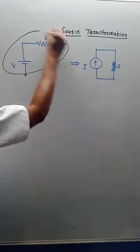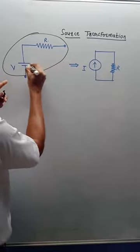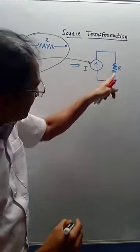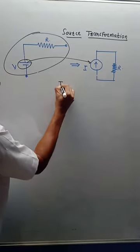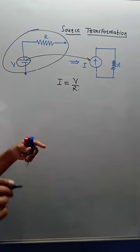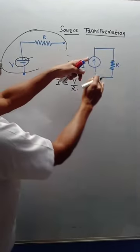If we have a voltage source in which a resistor is connected in series, you can directly convert this voltage source into a current source and draw the same resistance in parallel. To calculate the value of the current source, use Ohm's law: I = V/R.